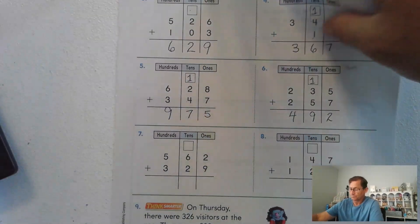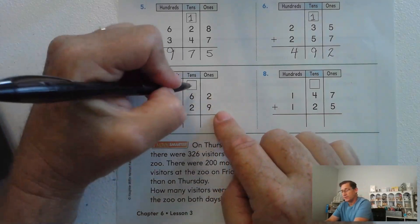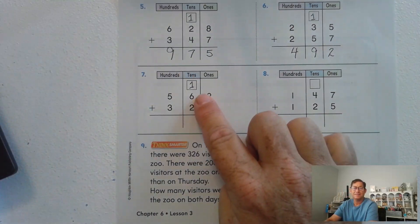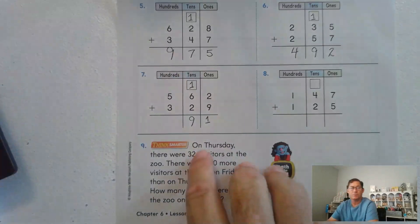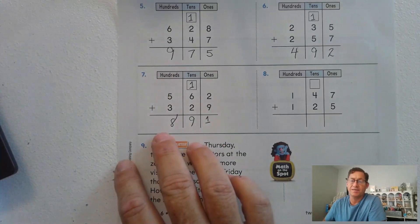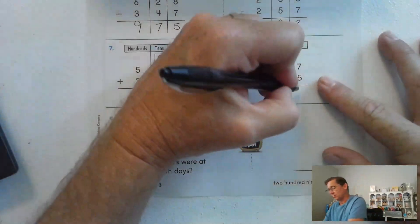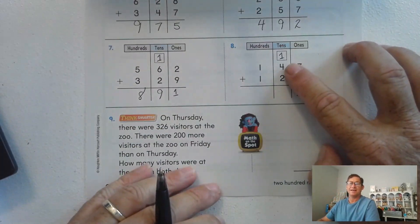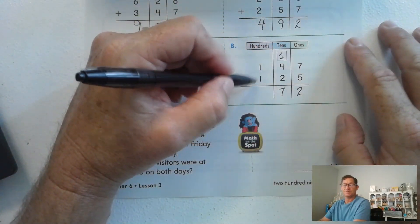Number seven: nine plus two is eleven ones — regroup as one ten and one one. Add the tens: six, seven, eight, nine, ten — we don't have to regroup the tens. 500 plus 300 is 800. Number eight: seven and five ones is twelve ones again — regroup as one ten and two ones. Add the tens: four, five, six, seven tens. Then add the hundreds: 200.